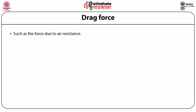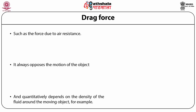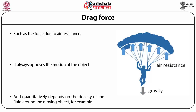Drag force, such as air resistance, always opposes the motion of an object and depends on the density of the surrounding fluid. For example, a person with a parachute landing down experiences gravity pulling them toward the ground and air resistance (drag force) opposing that motion. If gravity and drag force balance each other, the person floats; the drag force depends on the area in contact with the air.